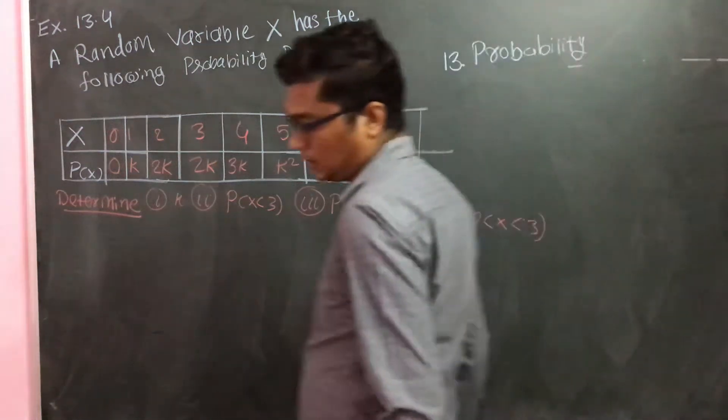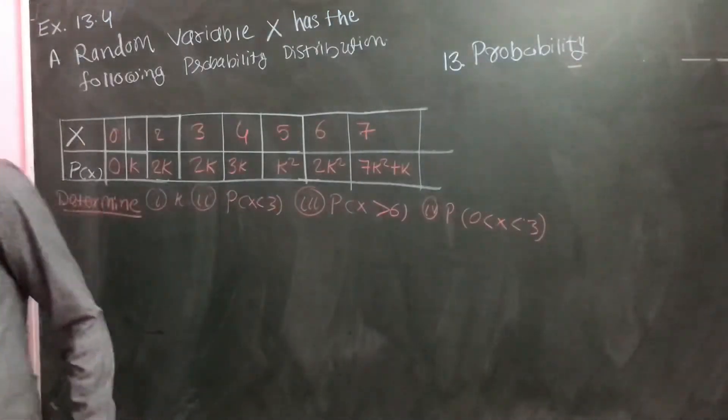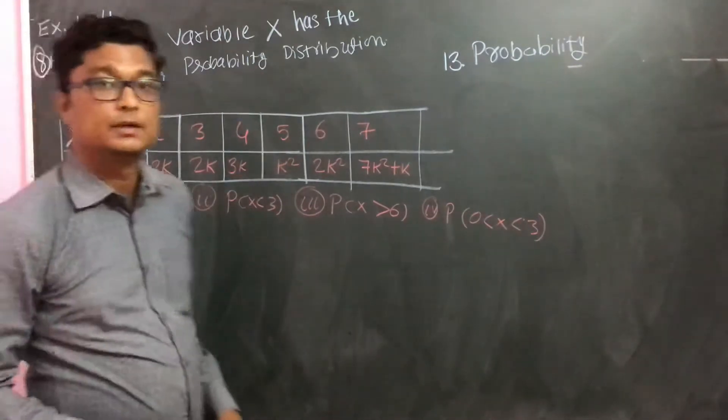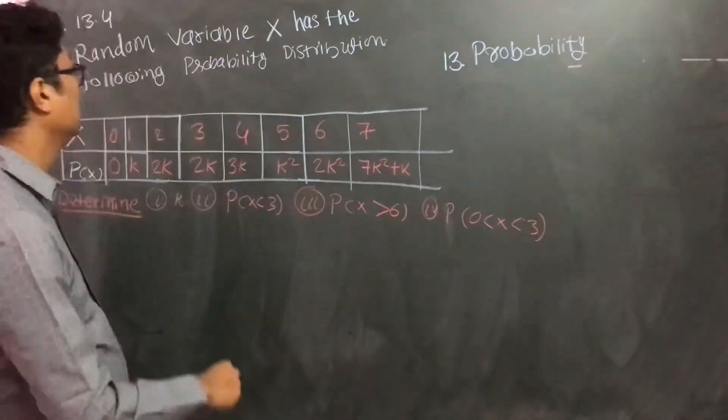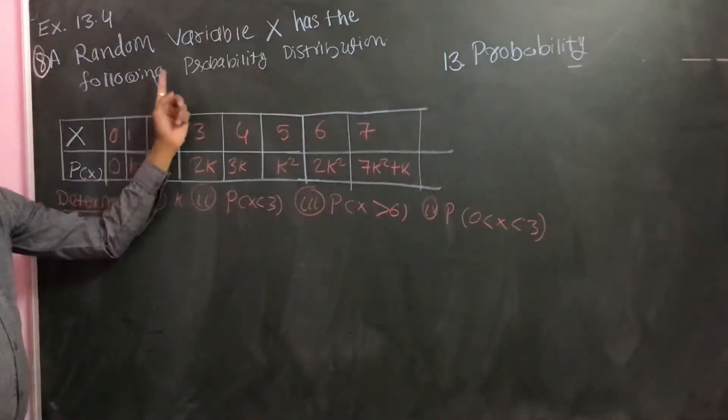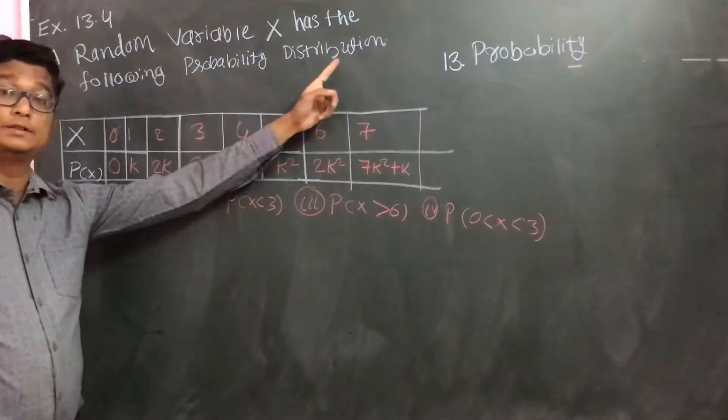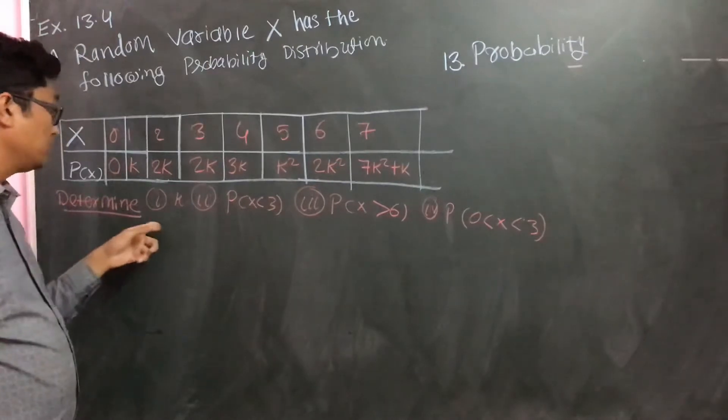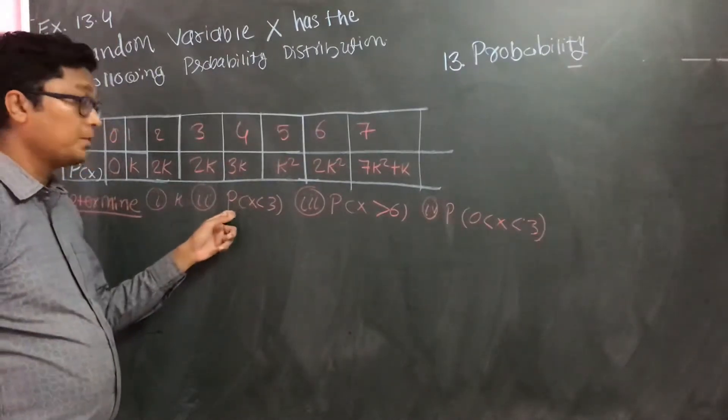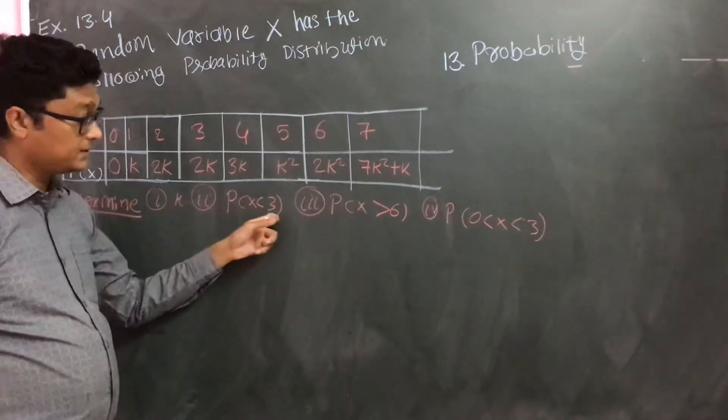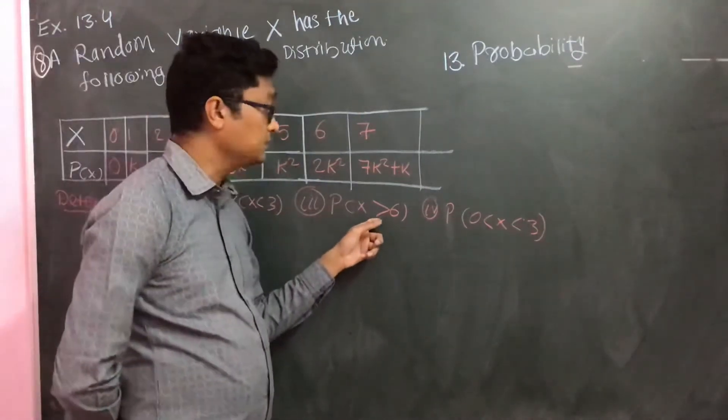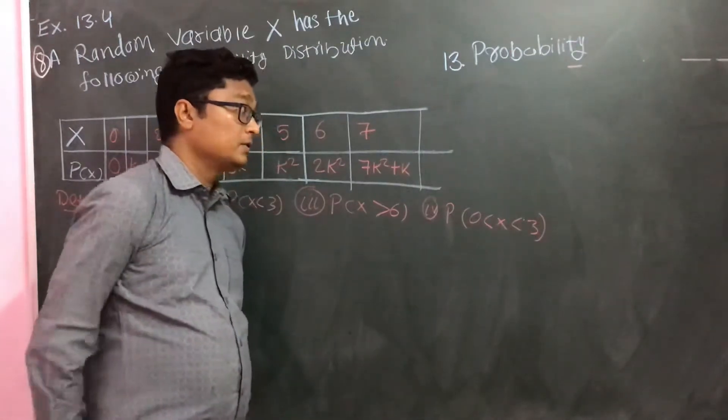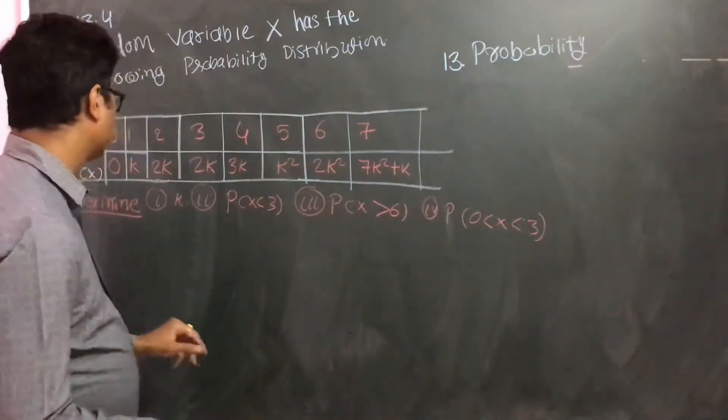So let's do problem number 8 in exercise 13.4. A random variable X has the following probability distribution. The distribution is given, and then we are asked to find out the value of k, then the probability of X less than 3, probability of X greater than 6, and probability of 0 less than X less than 3. So it is very easy. Let's do it.